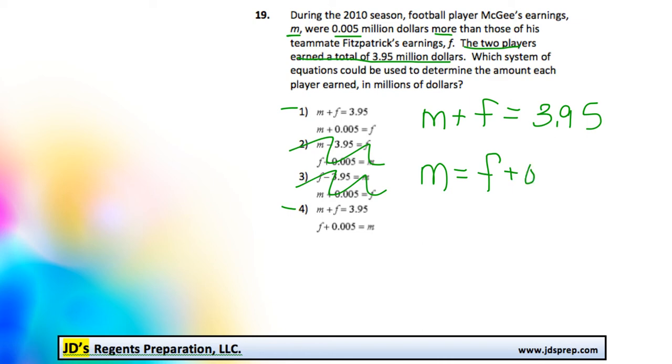So it would be F plus $0.005. And we can see that is in option number 4. Right there.